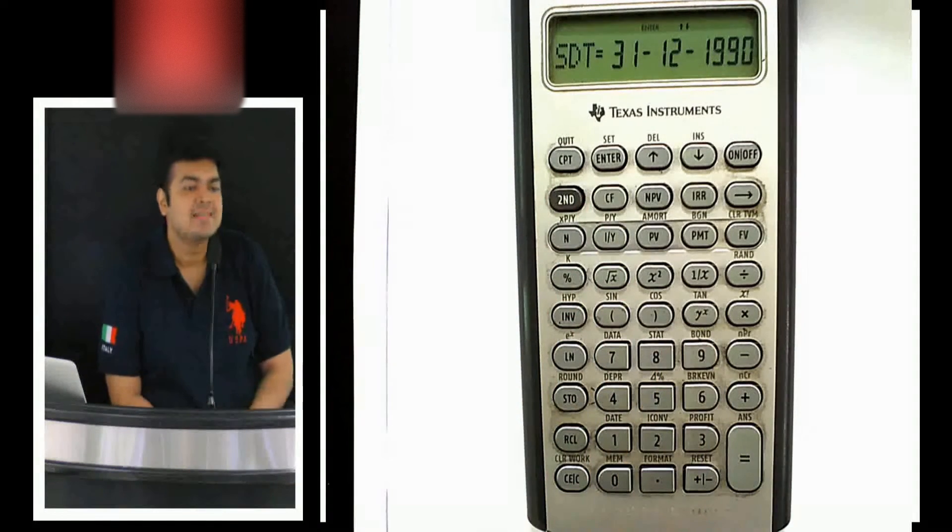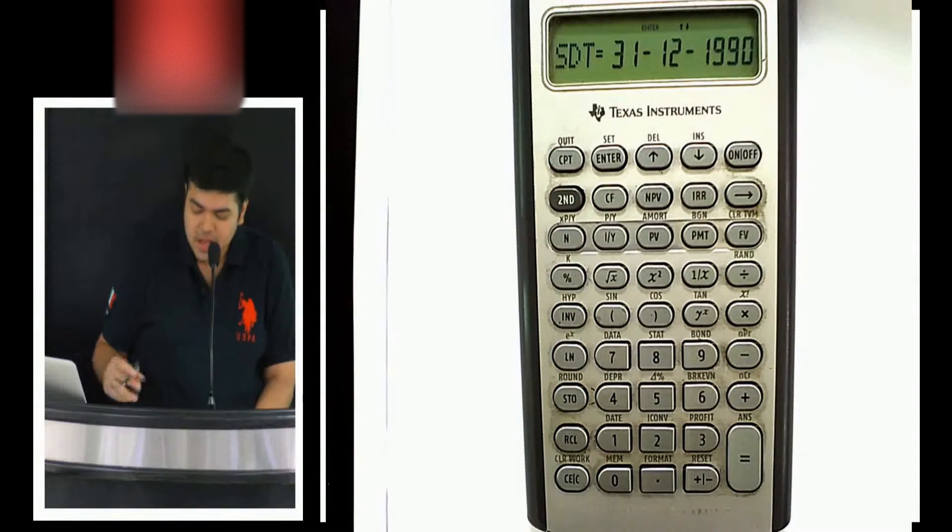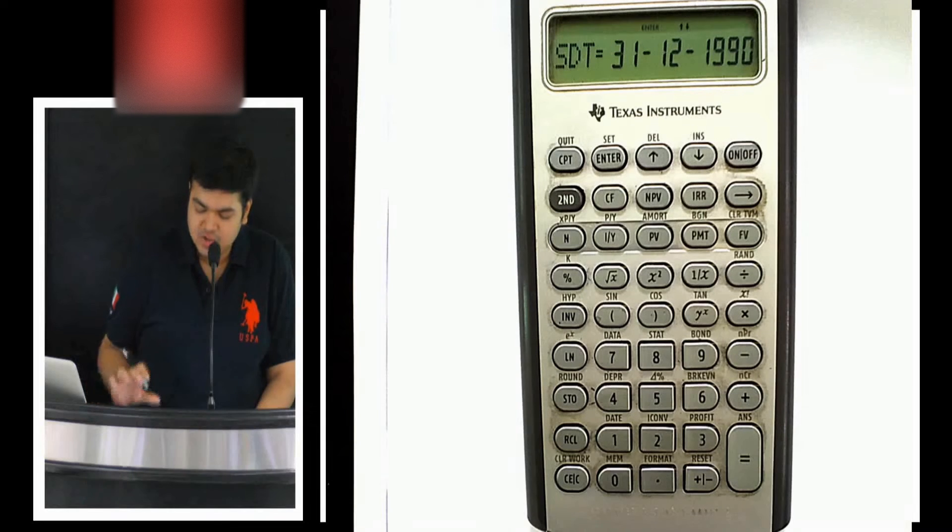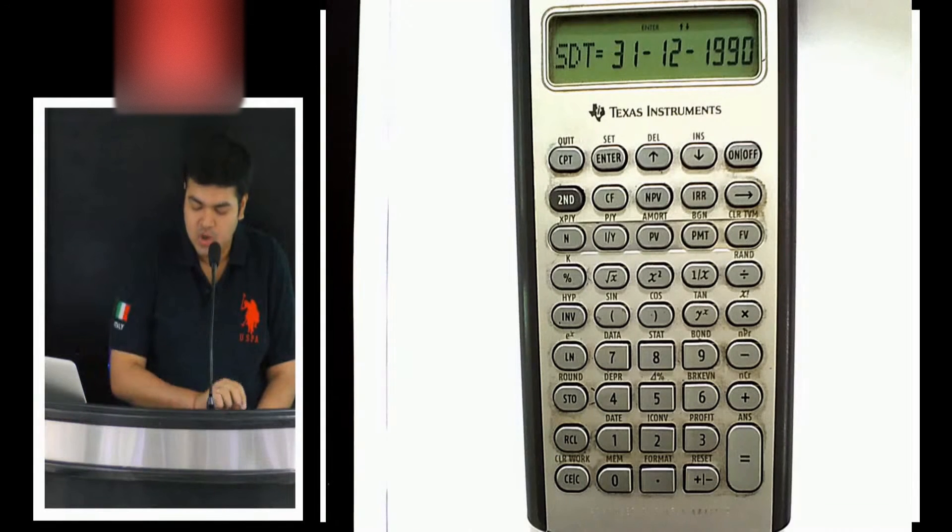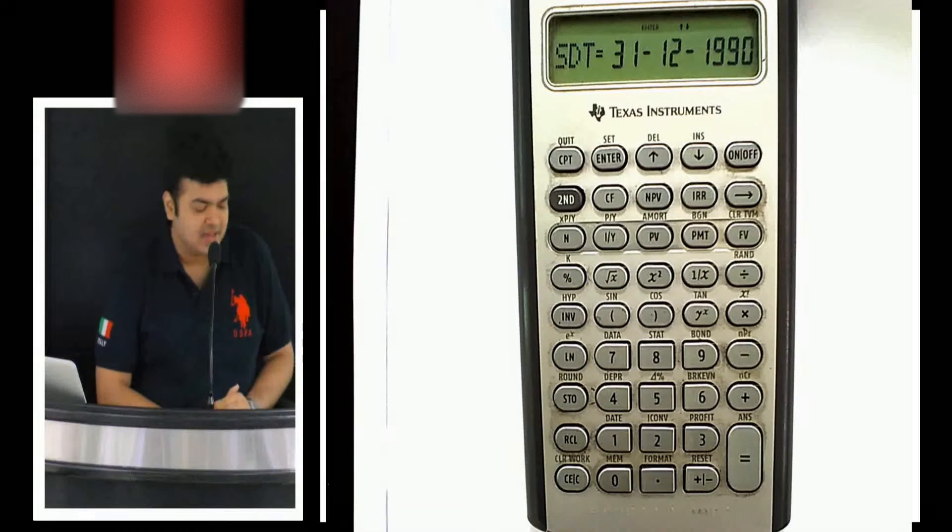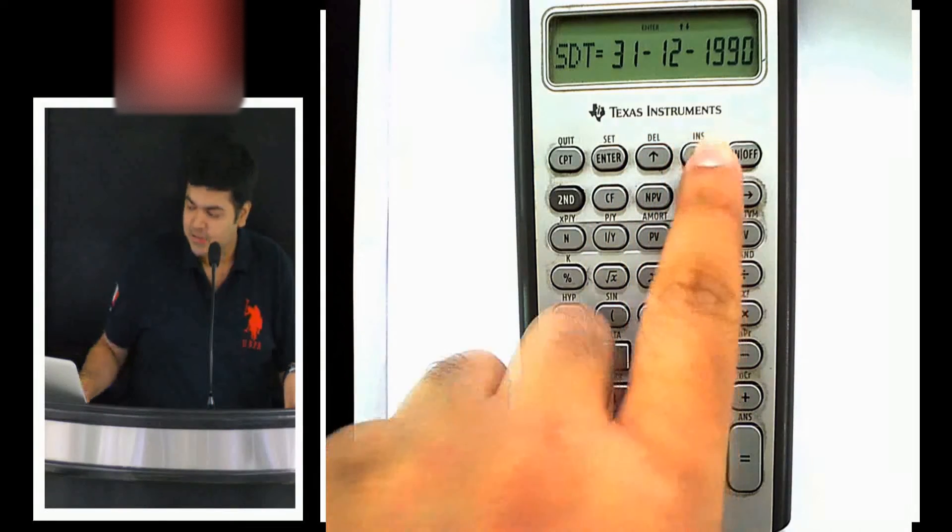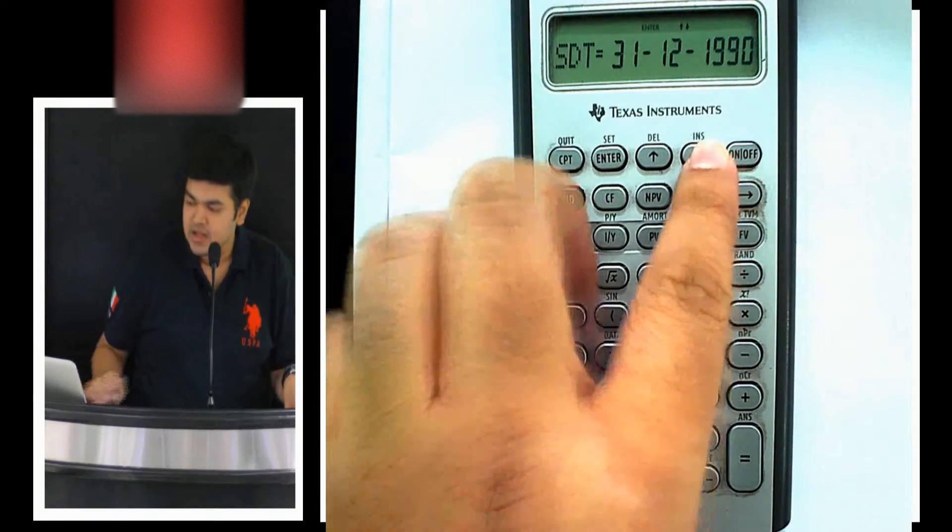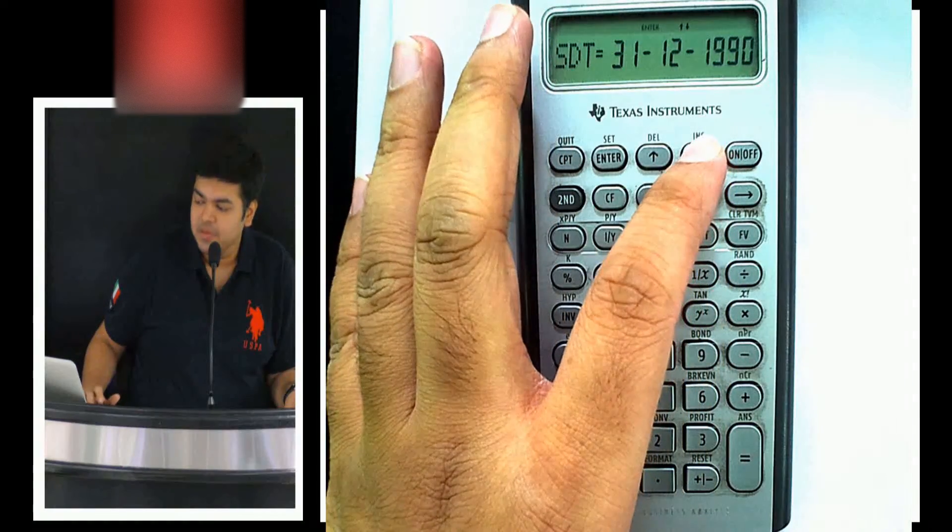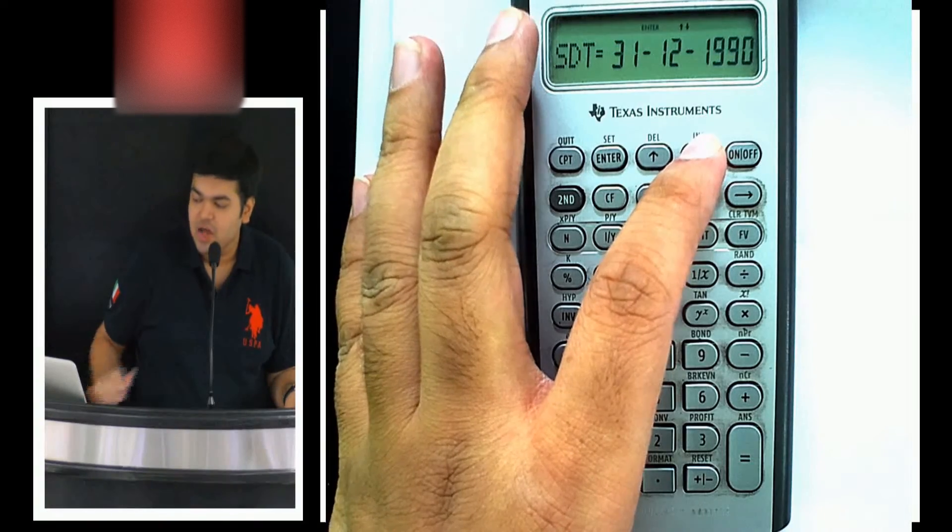Second bond. Now the bond function becomes a little difficult to understand and do the work on. Let's try and understand this. Let me take, for example, SDT stands for settlement date because we will be using this ourselves, manually, rather than using the calculator.